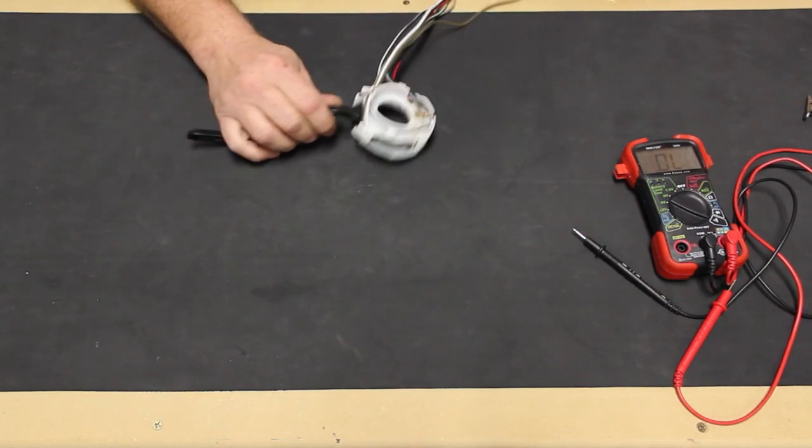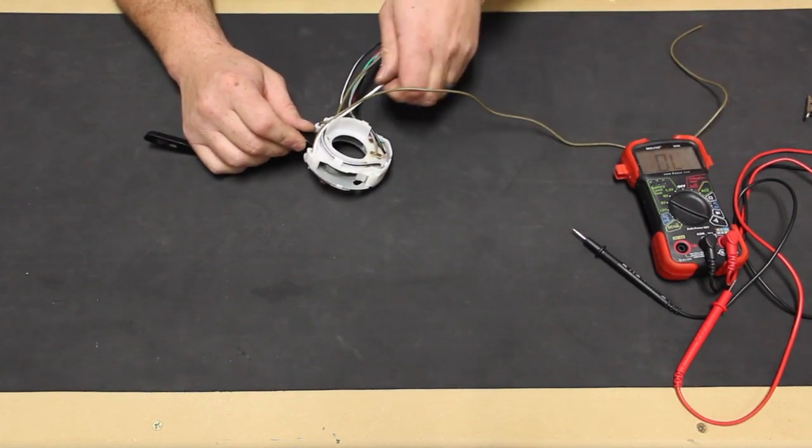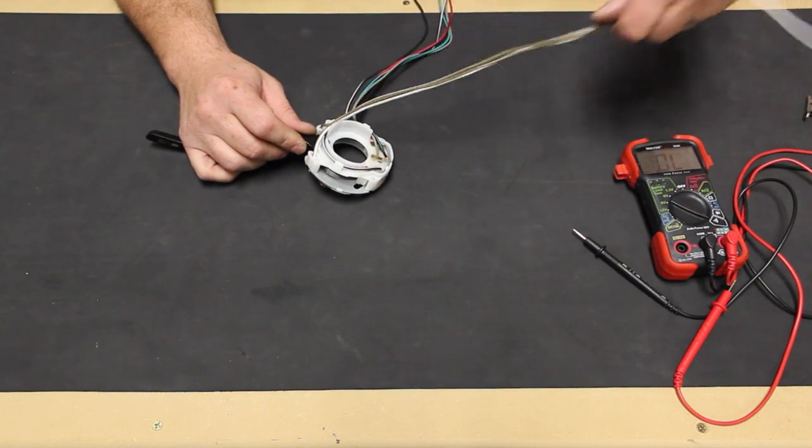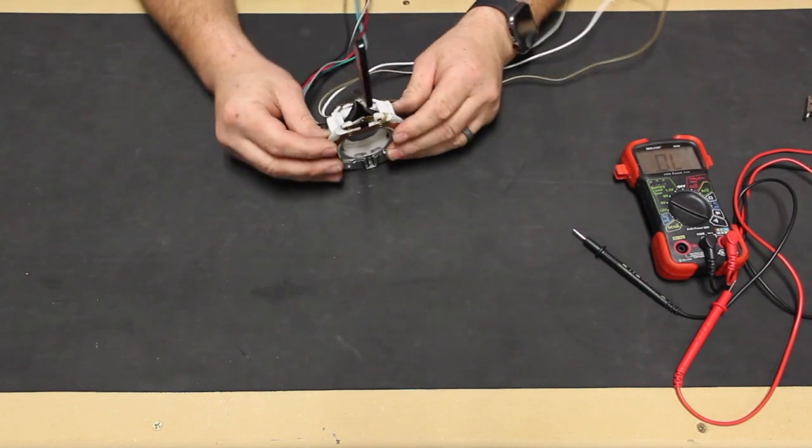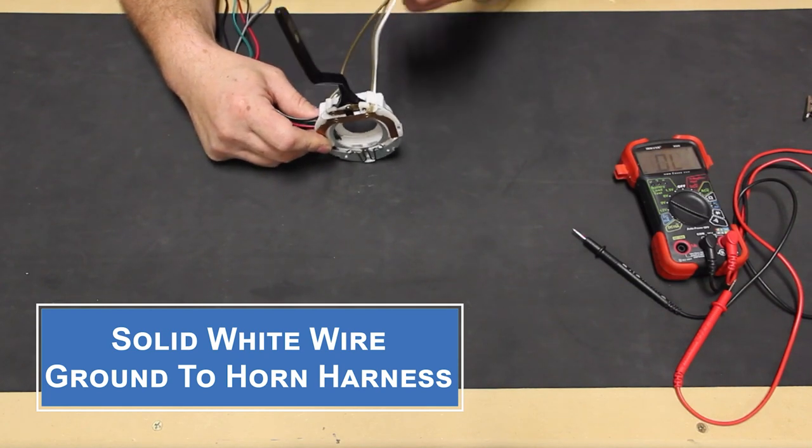Looking at the back side of the switch, we can see the various wires. On one side of the switch, we have a brown, a white, and a white and brown wire. These are all ground circuit wires. Looking where the wires attach on the switch, we can see the white wire connects to the contact ring for our horn.